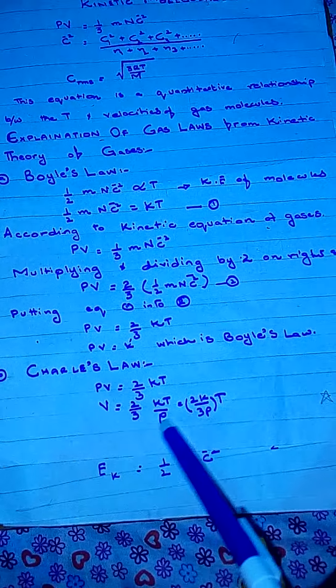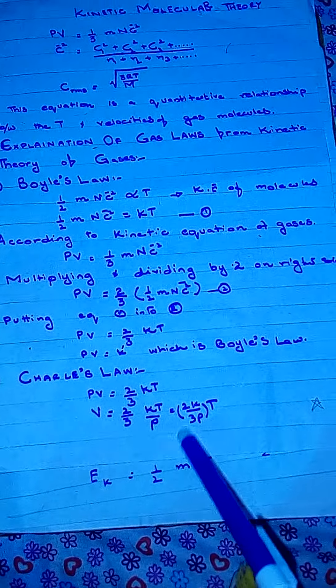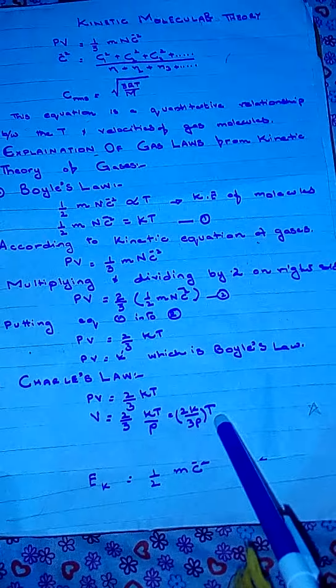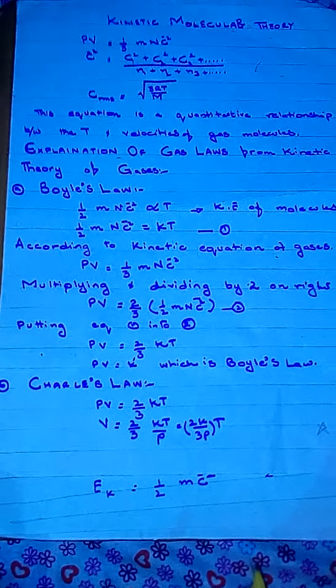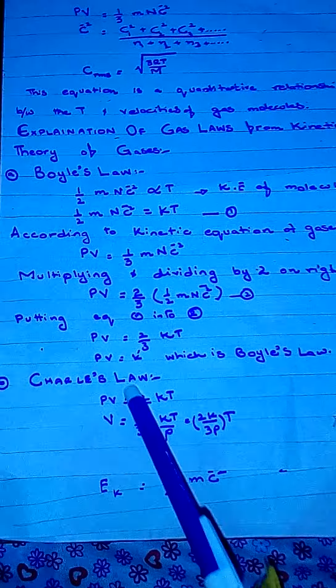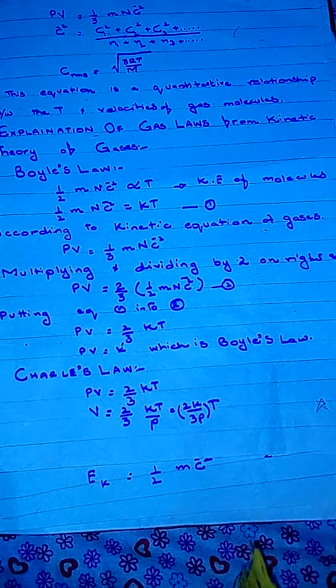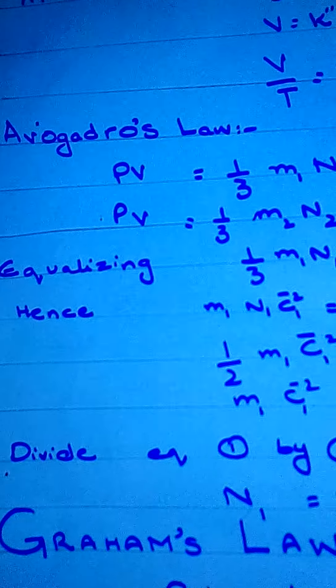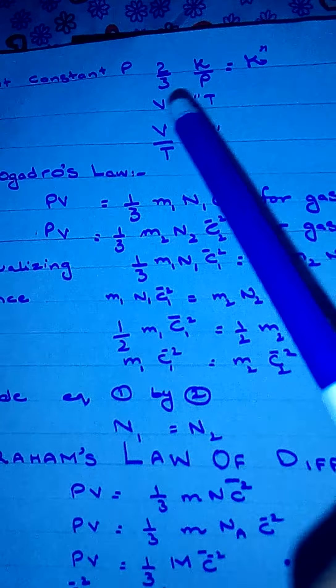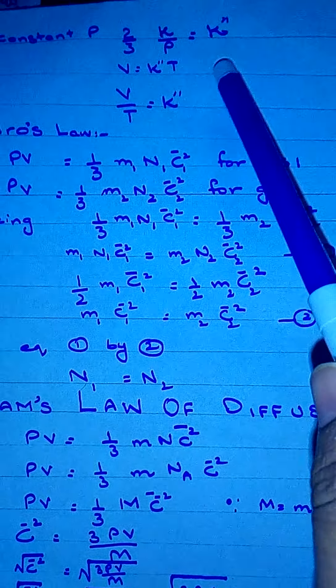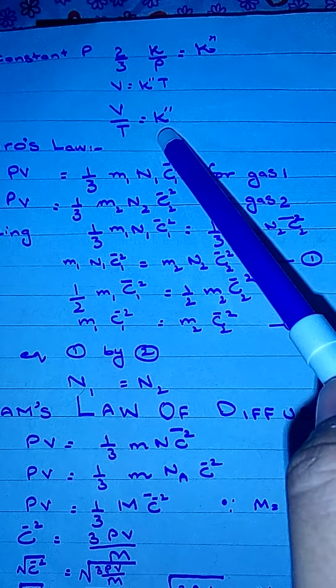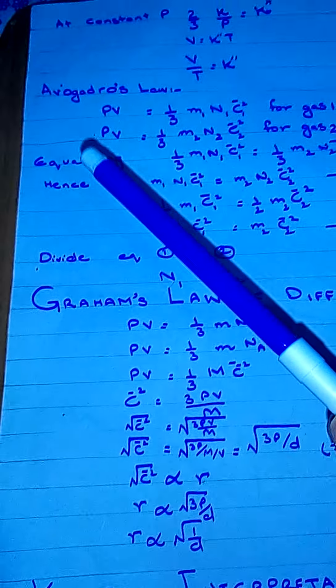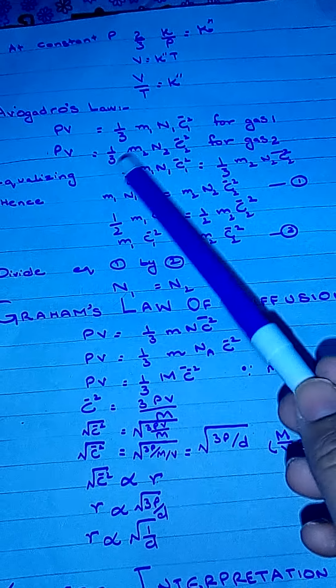From the derived equation PV = (2/3)KT, we can write V = (2/3)KT/P. At constant pressure, (2/3)K/P is a constant, which we replace with K″. So V = K″T, or V/T = K″, which is Charles's law.